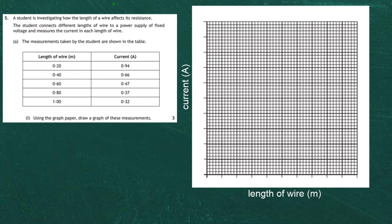Question 5 from section 2 of the 2019 National 5 Physics Examination from the SQA. A student is investigating how the length of a wire affects its resistance. The student connects different lengths of wire to a power supply of fixed voltage and measures the current in each length of wire. In part A, the measurements taken by the student are shown in the table below.